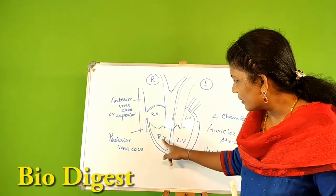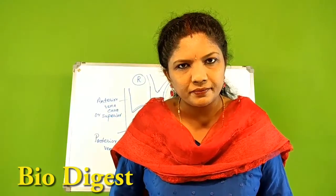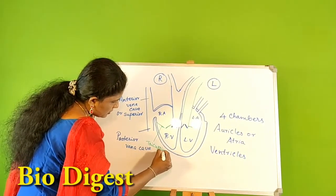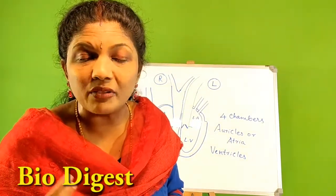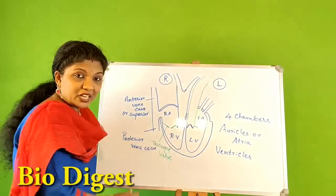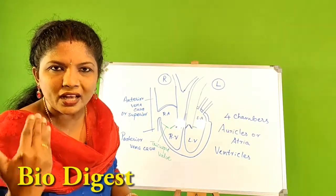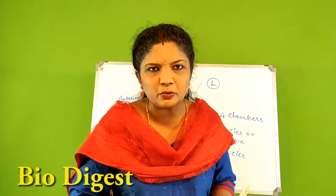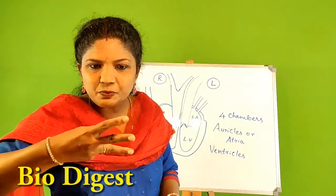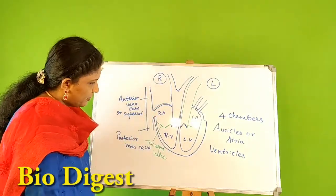Between the right auricle and the right ventricle, there is a three-cusp-like structure called the tricuspid valve. It is also called the right atrioventricular valve because it is present between the auricle and the ventricle. It is located at the aperture between the right auricle and the right ventricle. Tricuspid means it has three cusp-like structures that open to allow blood flow.